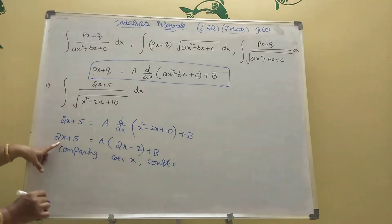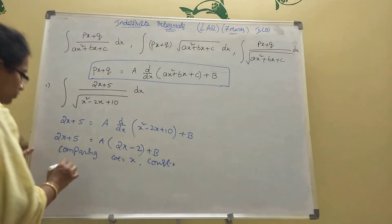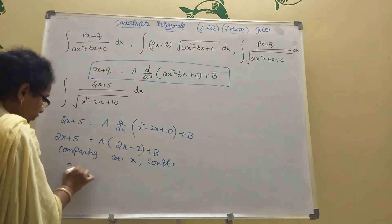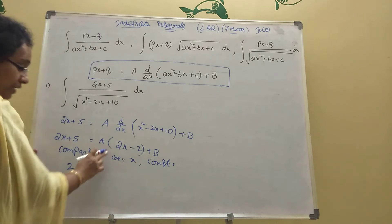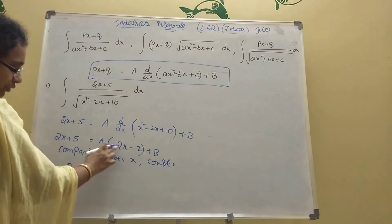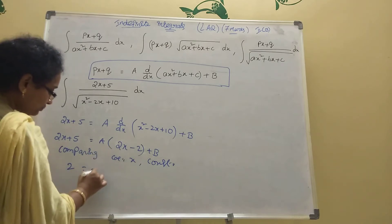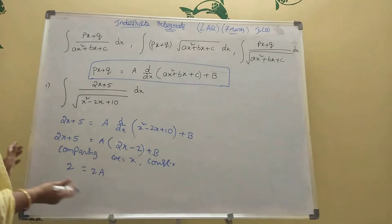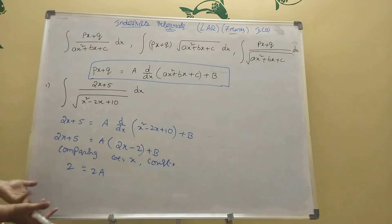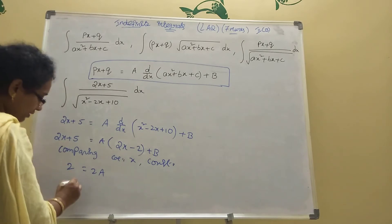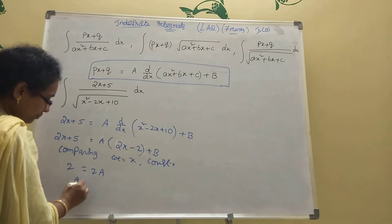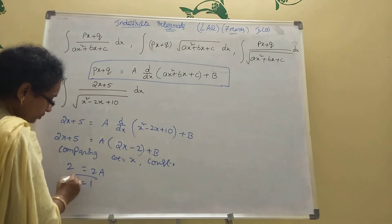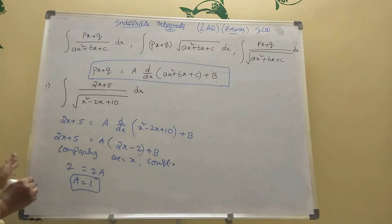Now see - x coefficient here: what is it? 2. So 2 equal to 2a, where x coefficient gives 2a. Tell me easily, a value is what? 1. We get a value equal to 1.